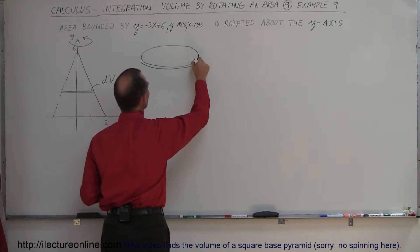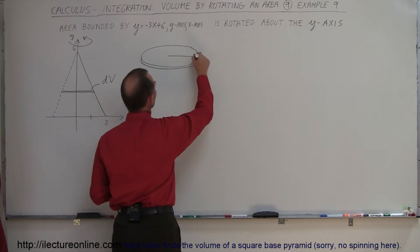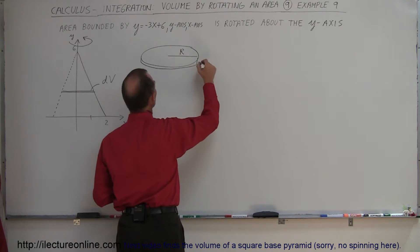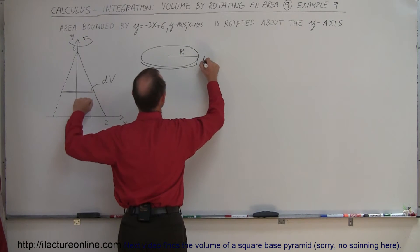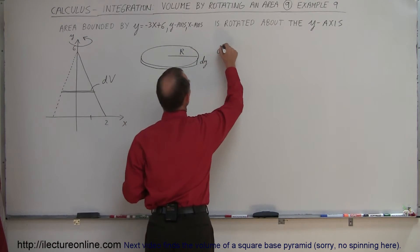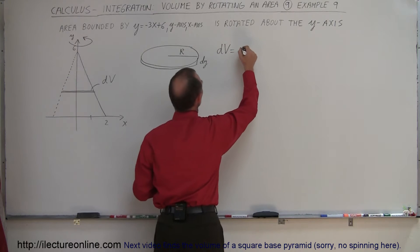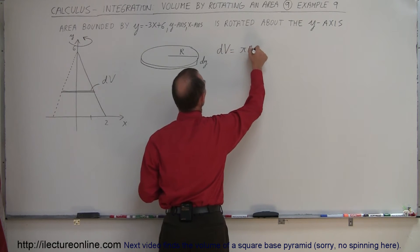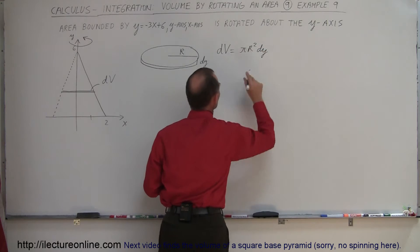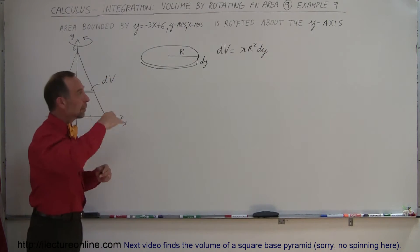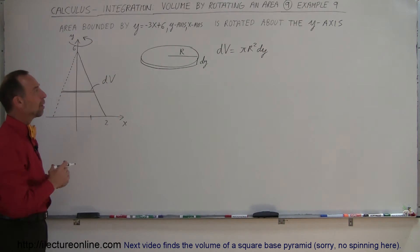And then determine what that volume is equal to. In this case, we can say that the disc has a radius r and a thickness would be a thickness dy. So therefore your dv is equal to π r squared dy. π r squared is the area of the disc. dy is the thickness of the disc that gives you the small volume, dv.